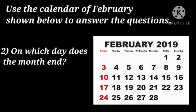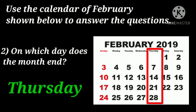Now let's move on to question number two: on which day does the month end? So let us find out the last day of the month, which is called the month end. The last date is 28. We have to find out the day on which the month ends. The last day of the month is Thursday.